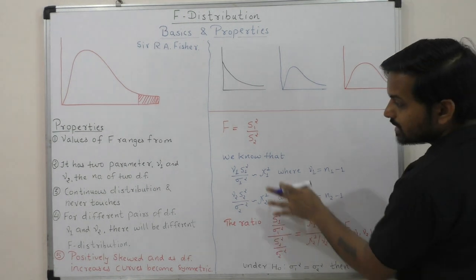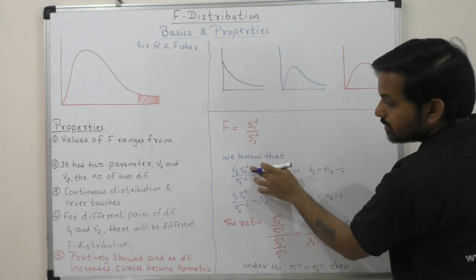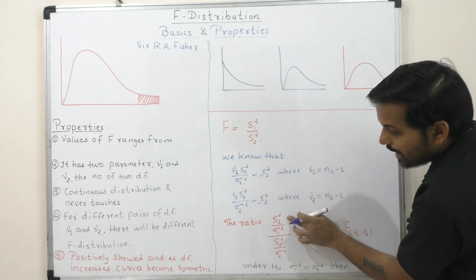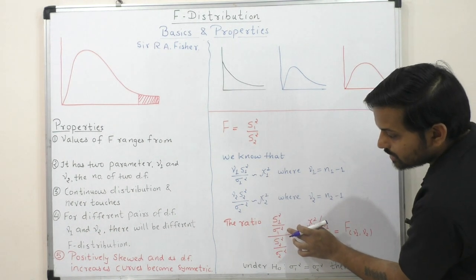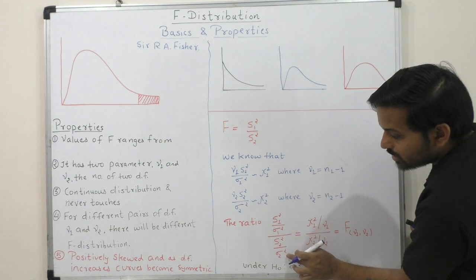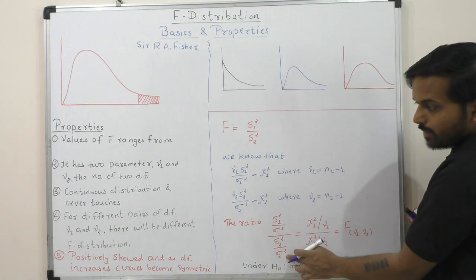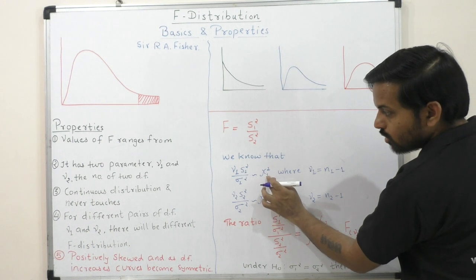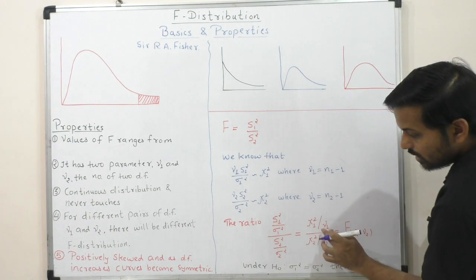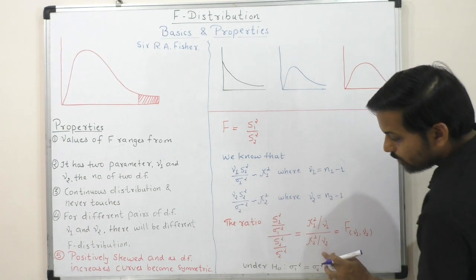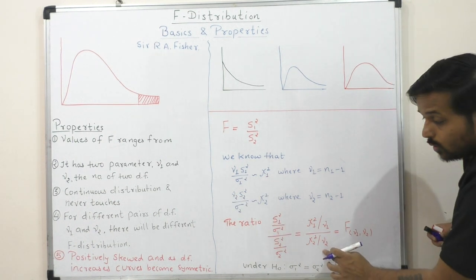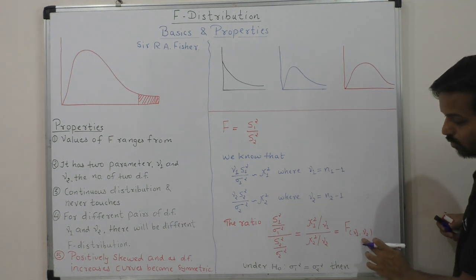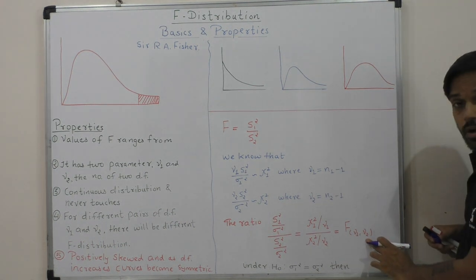We take the ratio of sample variance divided by population variance: s1 squared upon sigma 1 squared, divided by s2 squared upon sigma 2 squared. This gives chi-square 1 divided by ν1, over chi-square 2 divided by ν2. This results in the F test with ν1 and ν2 degrees of freedom.